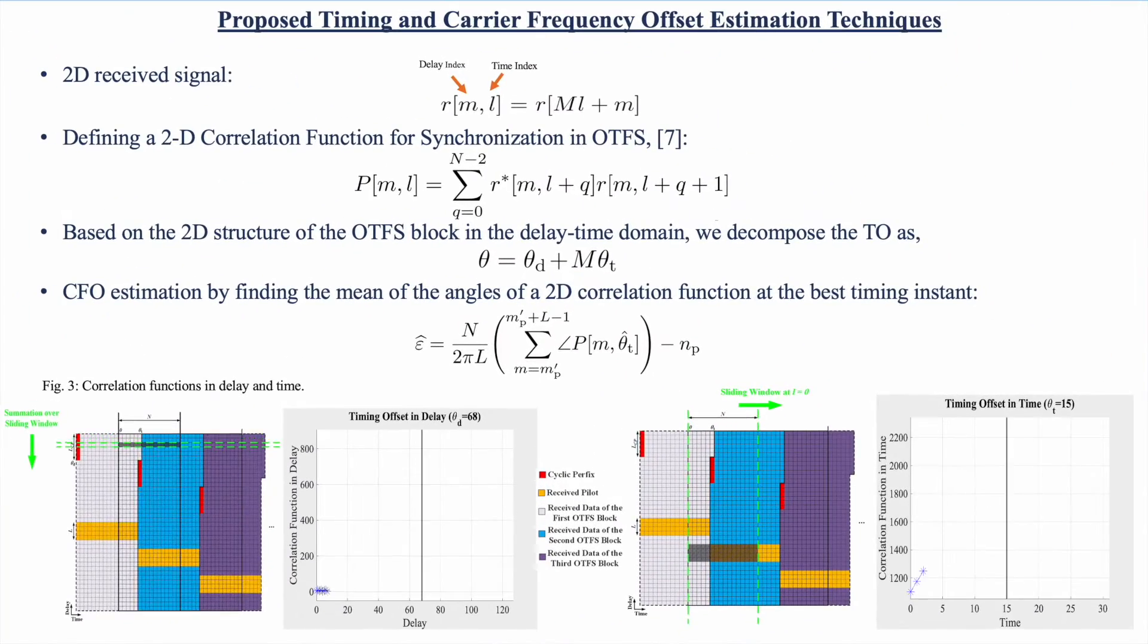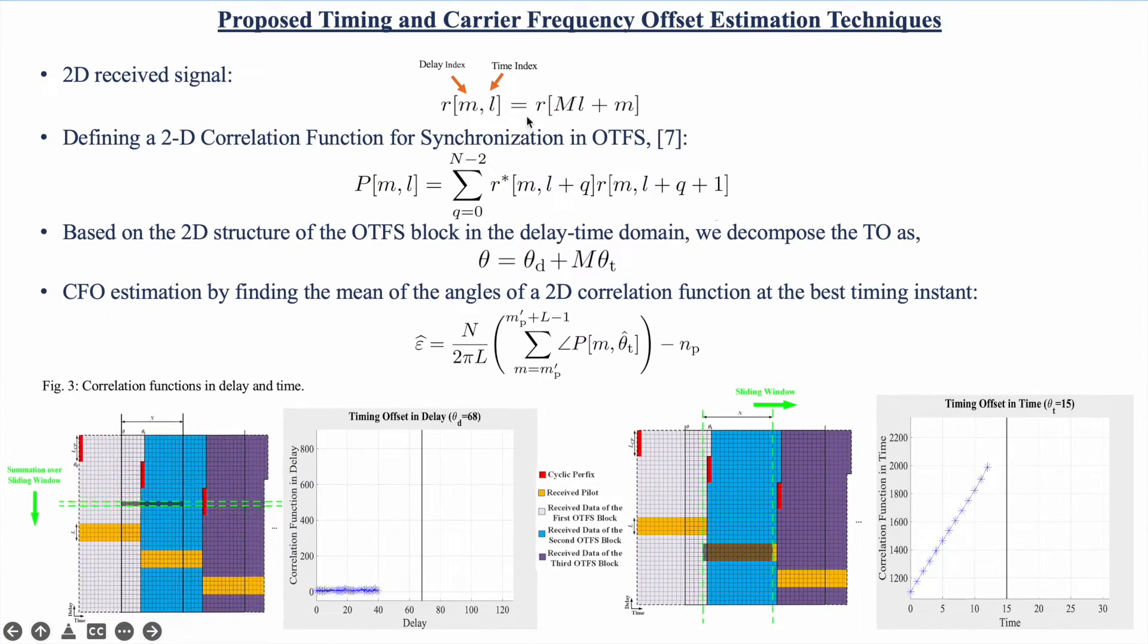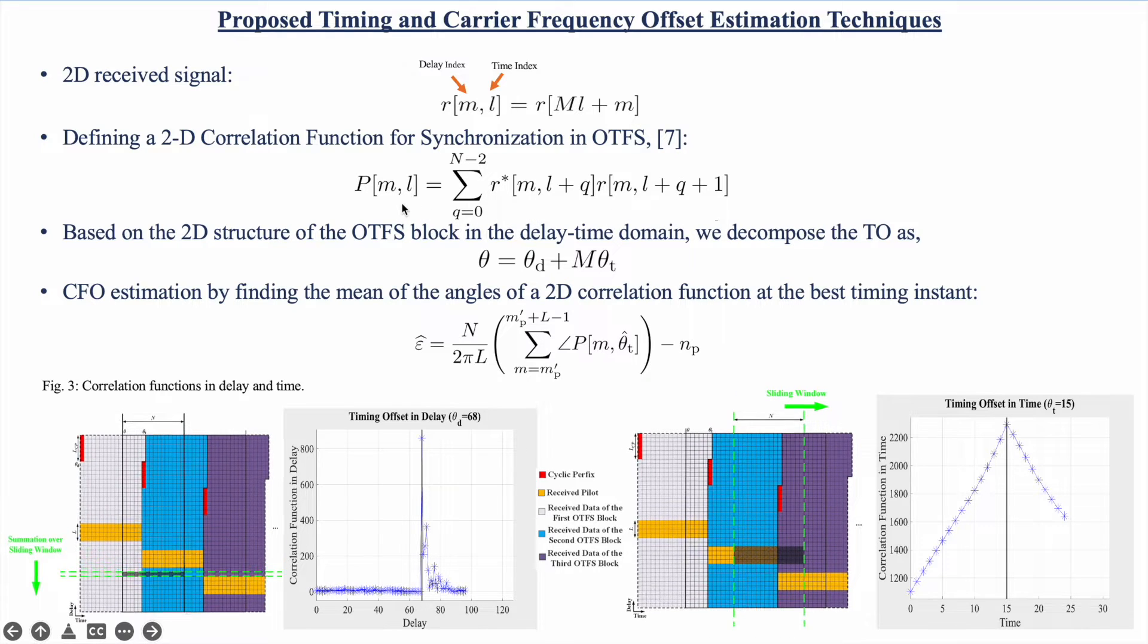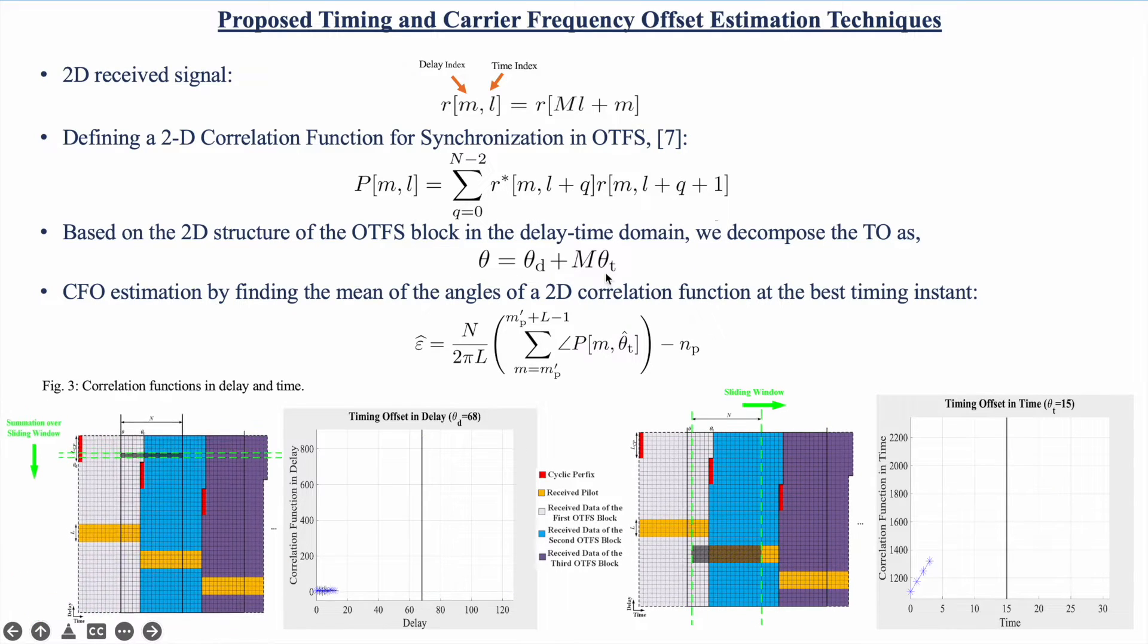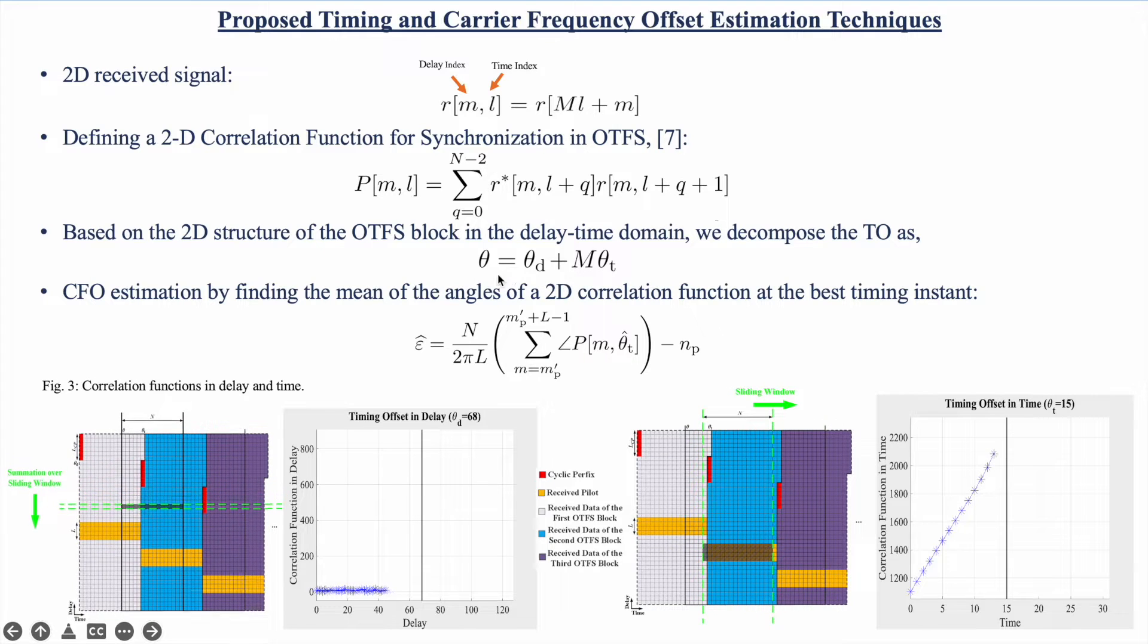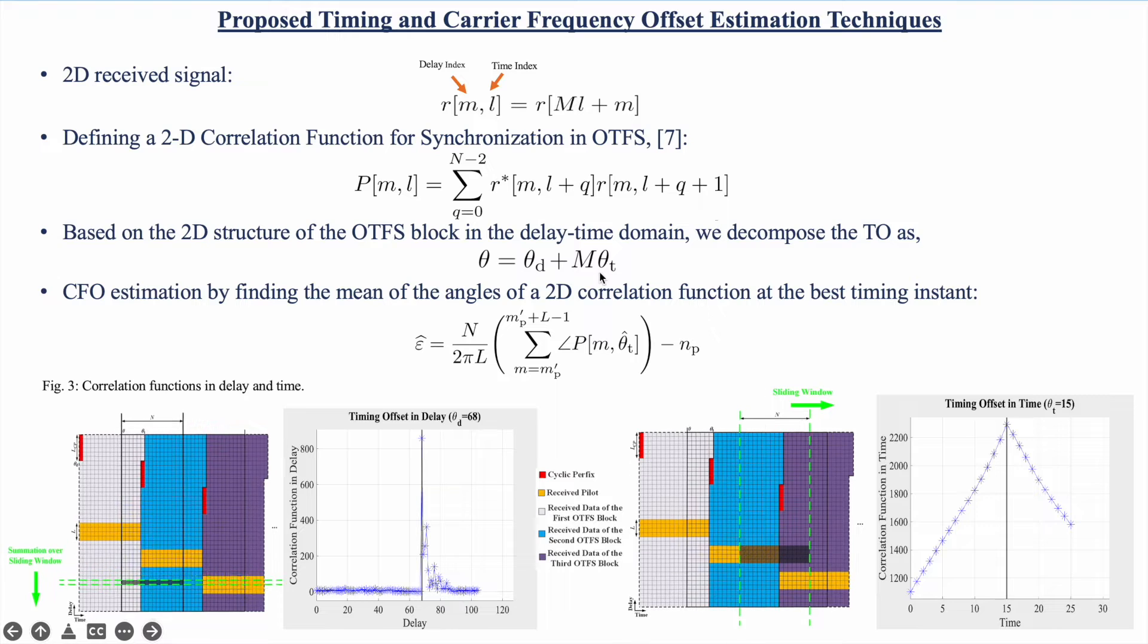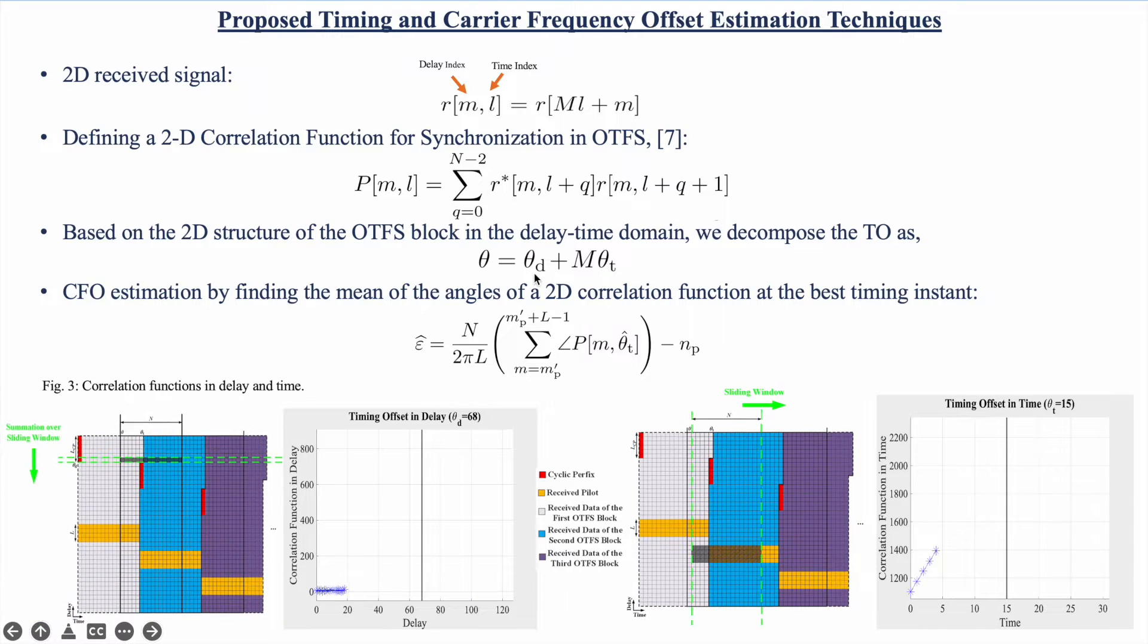For estimating the offset, first we reorder the received signal from serial to parallel and then we define a 2D correlation function. Based on this 2D structure, we decompose the timing offset into two different values: timing offset in delay and timing offset in time.